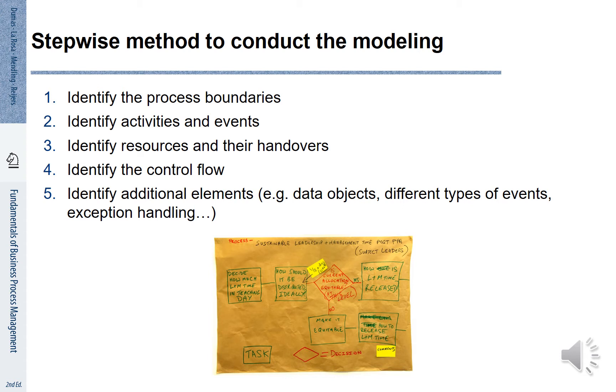There are five steps. First, identify the process boundaries. Second, identify activities and events. Third, identify resources and their handovers. Fourth, identify the control flow. Five, identify additional elements such as data objects, events, exception handlings and so forth.